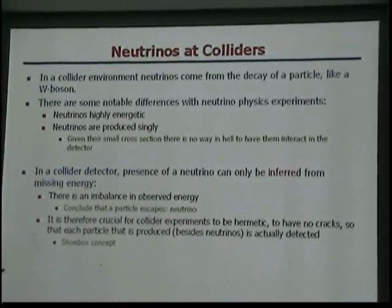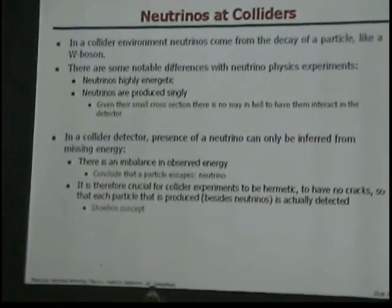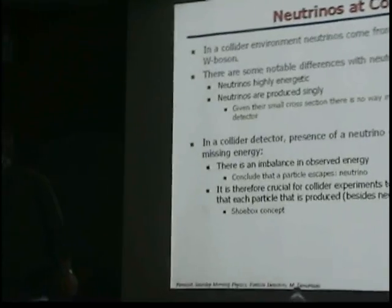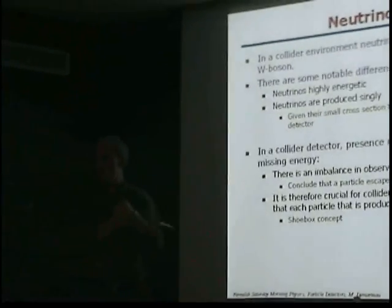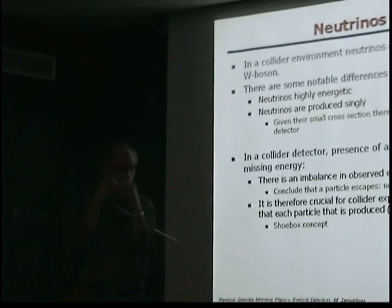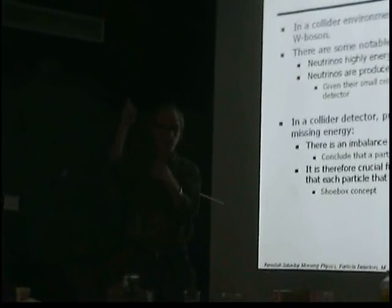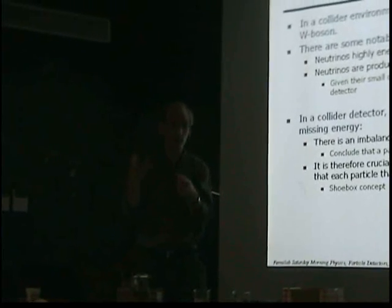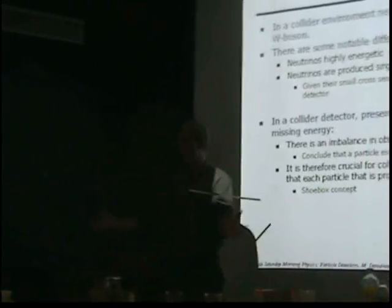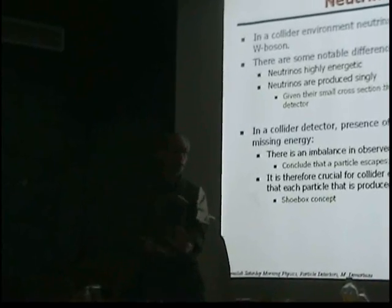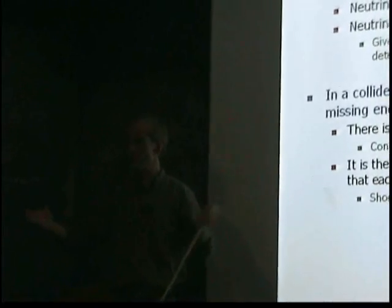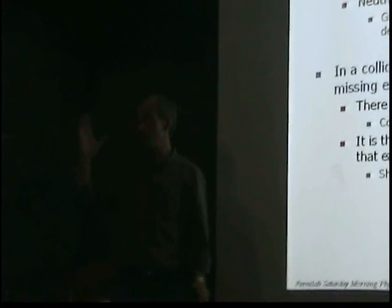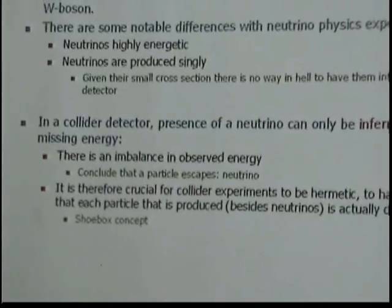So how do we detect them? We cannot detect them — we can only infer them. These detectors are what I call shoebox detectors. You cover the interaction point completely from all sides so that nothing escapes. Then you know that energy and momentum are conserved. So if you see that energy is missing, you say 'aha, that must have been the neutrino.' So they are referred to as missing energy, and we associate that with the neutrino.